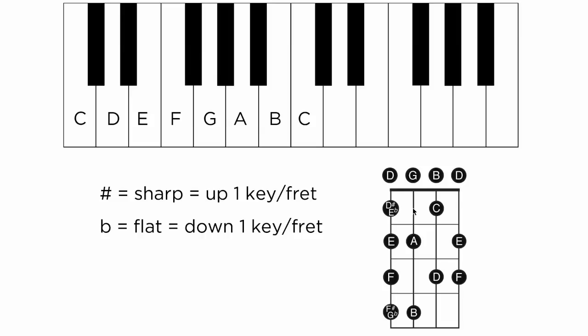From G up one fret to G sharp or down from A to A flat. From A up to A sharp or down from B for B flat. From C up a half step for C sharp or down a fret for D flat.